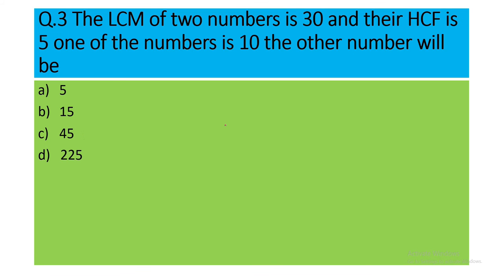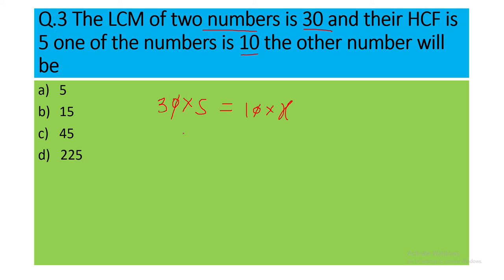Move to the third question: the LCM of two numbers is 30 and the HCF is 5. One of the numbers is 10, and the other number will be? Using the same formula: LCM 30 into HCF 5, divided by 10. Cancelling out, X equals 15. The second number is 15, and option B is the correct answer.